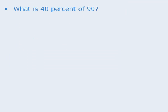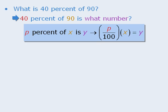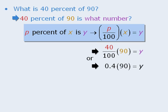Now let's use this to answer the questions we answered earlier. To apply this rule, it's a good idea to first rewrite the question in the same format. We can see that p equals 40, x equals 90, and our unknown value is y. So we can plug the values into the formula to get 40 over 100 times 90 equals y, which we could also write as 0.4 times 90 equals y if we want to use decimals.